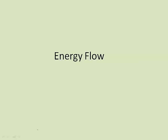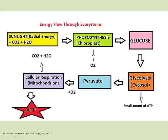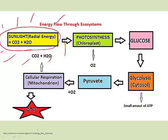Another idea we want to look at is energy flow. Energy flows through the ecosystem from things like the sun to living organisms, and then from one organism to another. Pretty much all energy that living things use, with a few exceptions, comes from the sun. So sunlight is our starting point, and when photosynthesis happens, that's a plant's way of converting light energy into chemical energy — and the chemical it converts it to is glucose, the universal energy currency in living things.